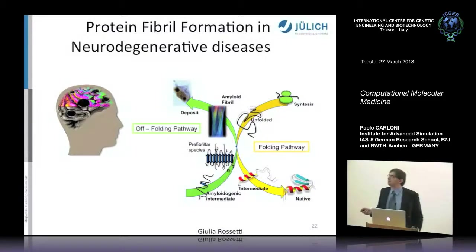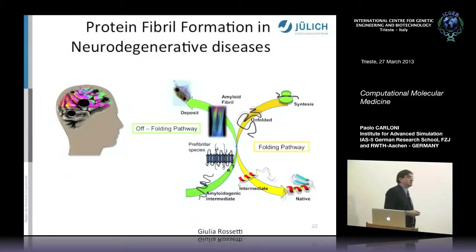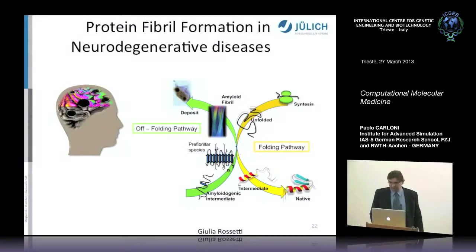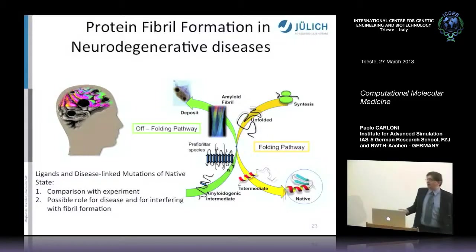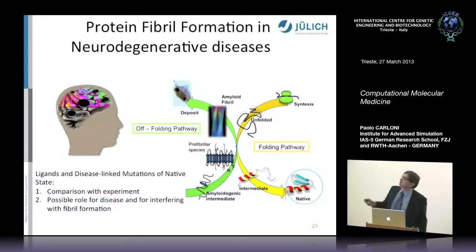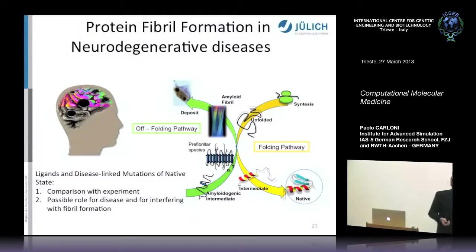Unfortunately, in some proteins, some take a different route. They form increasingly beta-sheet rich structures—more and more beta strands until proto-fibrils and fibrils are formed. These are seen in post-mortem brains of patients suffering from these diseases as plaques. This has nothing to do with the usual receptor-ligand interaction because there is no cavity, and we don't know how the binding site looks like.